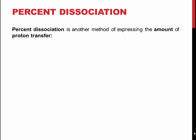The percent dissociation is another way to express the degree to which an acid dissociates. It is found by dividing the equilibrium concentration of hydronium ions by the initial salicylic acid concentration and multiplying by 100.